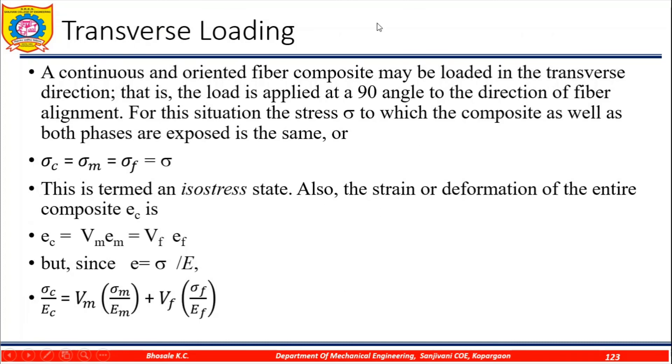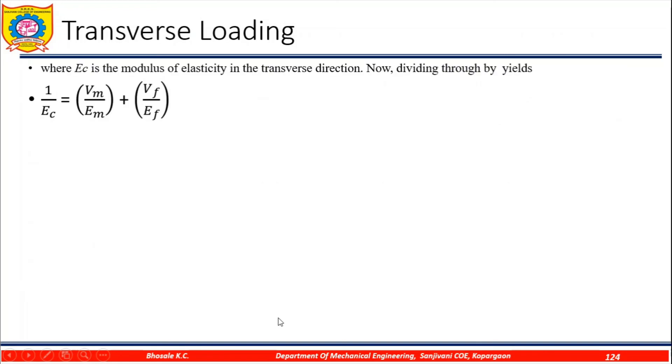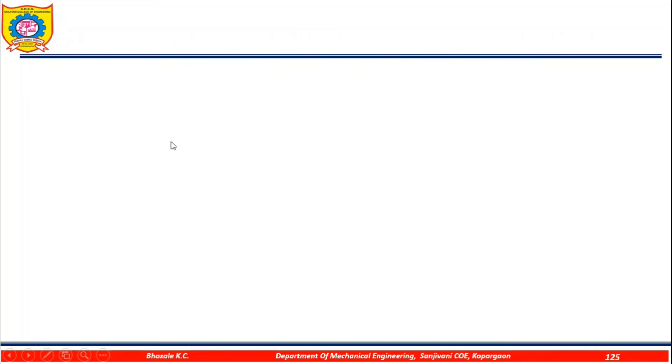Similarly, when you apply the load in the transverse direction, that is, perpendicular to the axis. A continuous and oriented fiber composite may be loaded in the transverse direction. That is, the load is applied at a 90 degree to the direction of fiber alignment. For this situation, the stress to which the composite as well as both phases are exposed is the same. Sigma_c equals sigma_m equals sigma_f. This is termed an isostress state. Also, the strain or deformation of the entire composite will be epsilon_c equals V_m times epsilon_m plus V_f times epsilon_f. But since epsilon equals sigma/E, we can replace the value and find out this equation. From this equation, we are getting the modulus: 1/E_c equals V_m/E_m plus V_f/E_f.